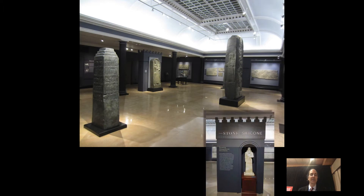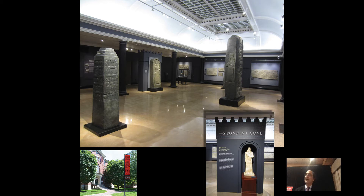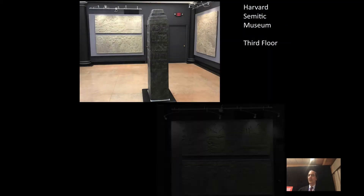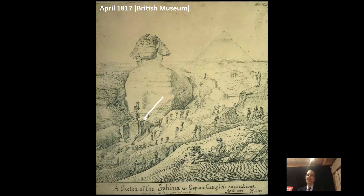My story about the Giza Dream Stela really begins in Mesopotamia, where we've been revitalizing our galleries. My curator Adam Asia came up with a way to create lightweight resin casts from the old heavy, flaky, fragile, unexhibitable plaster casts of a hundred years ago. He started with our collection of Assyrian palace reliefs — here you see one of our revamped galleries with all these reliefs in place, done with student help and for course credit. The process was so successful that, being Egyptologically biased, I wanted to apply it to something Egyptian.